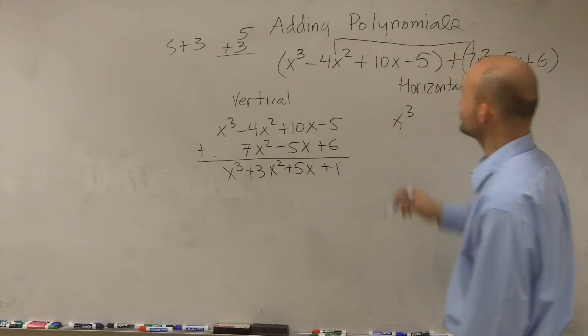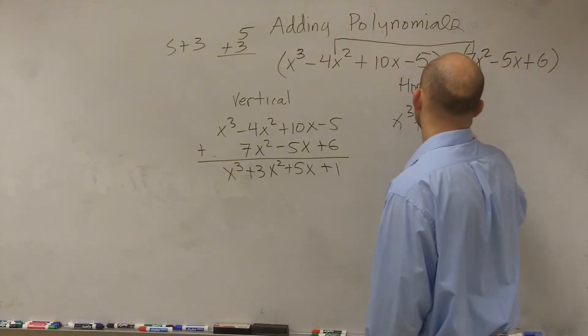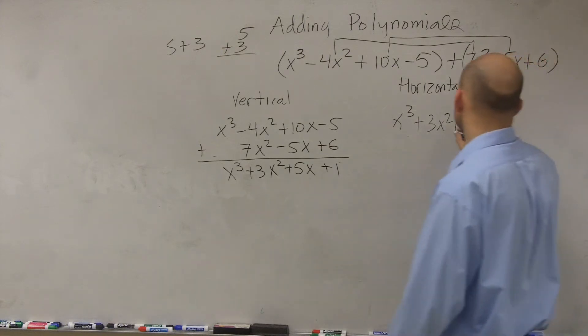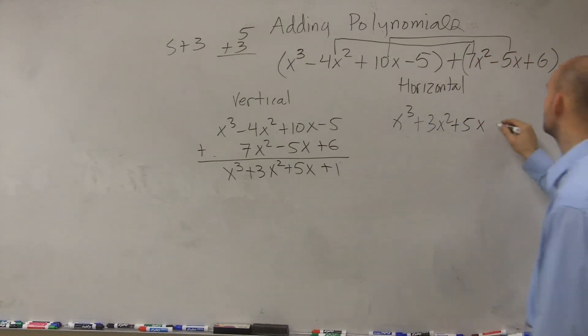So you say that's x³. Negative 4x² plus 7x² is positive 3x². Then you could say these two terms add up to each other. So 10x minus 5x is positive 5x. And then you have negative 5 plus 6 is positive 1.